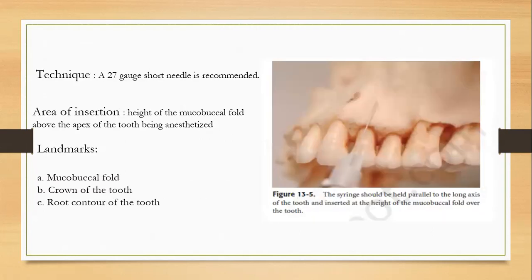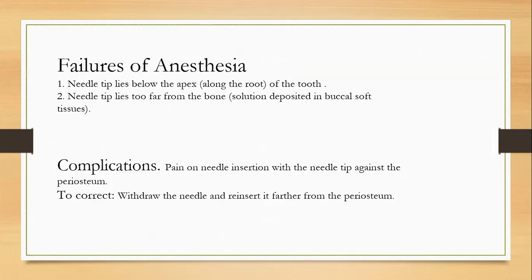Landmarks are the mucobuccal fold, the crown of the tooth, and the root contour. Anesthesia failure occurs if the needle tip lies below the apex along the root, or if the needle tip lies too far from the bone — the solution will be deposited only in the buccal soft tissue and the patient will have pain. Complications include pain on needle insertion; to correct, withdraw the needle and reinsert it.